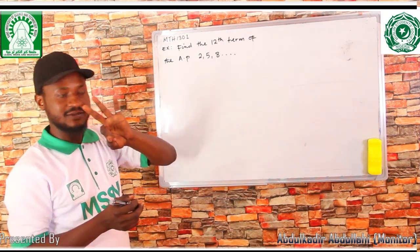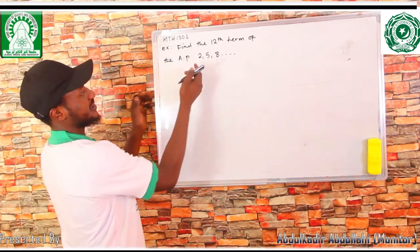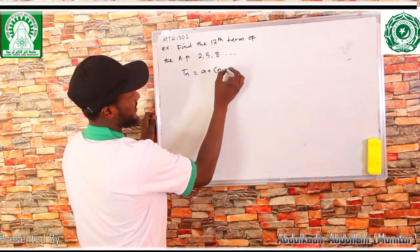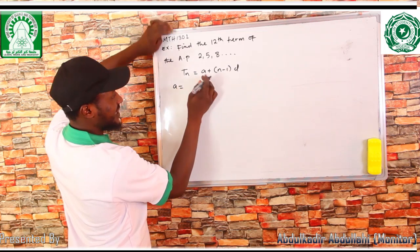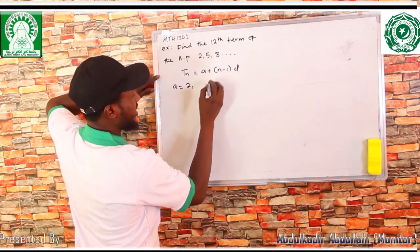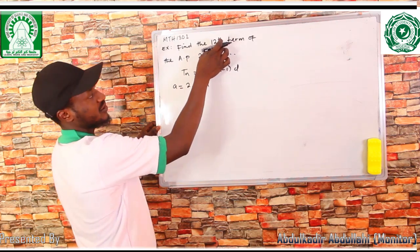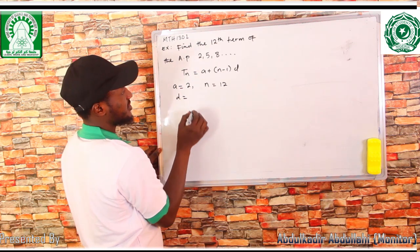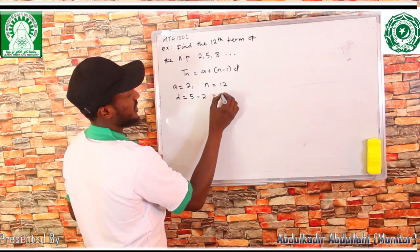We are given only three terms and we want to find the twelfth term. We are going to use the formula which says T_N = A + (N - 1)D. Let's collect our data: A is the first term, which is two. N is the number of terms we are asked to find — the twelfth term, so N = 12. D is the common difference, which equals three.